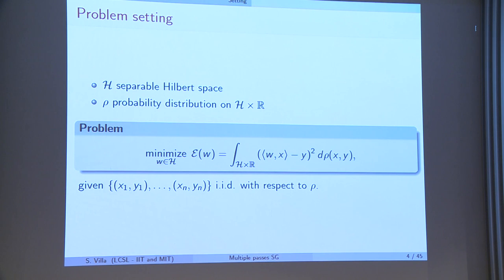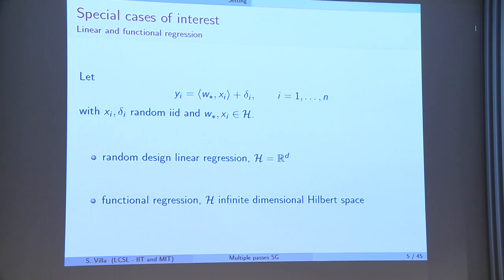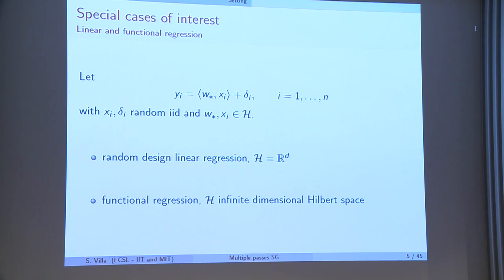We can only access a finite number of points called examples — I have access only to these points that are independently and identically sampled from rho. This setting naturally includes linear regression with Gaussian noise in R^d: if I fix H to be R^d, I can generate data by randomly sampling points x_i in R^d and measuring linear observations corrupted by Gaussian noise delta_i. This framework also includes functional regression if my input points belong to an infinite-dimensional space, such as curves or functions.